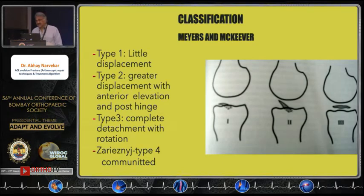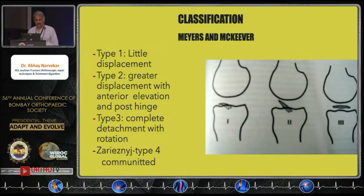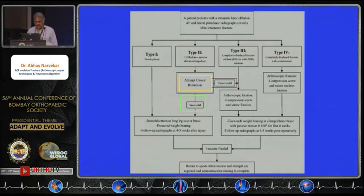This is a classification that has been followed for the last 50 years. Type 1 has very little displacement; Type 2 has greater displacement with anterior elevation, like a trap door with a posterior hinge. Type 3 is a complete detachment, divided into 3A — with internal rotation — and 3B with external rotation. Type 4 is the comminuted one.